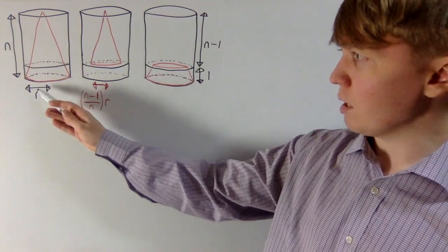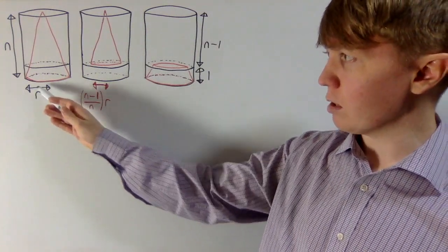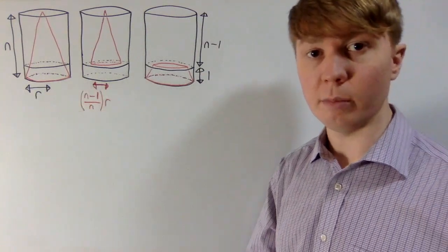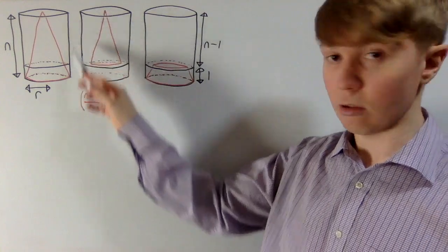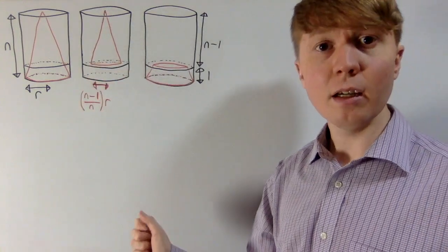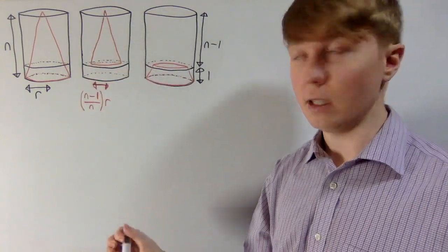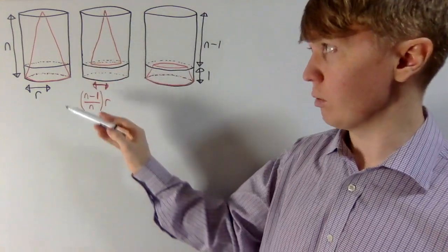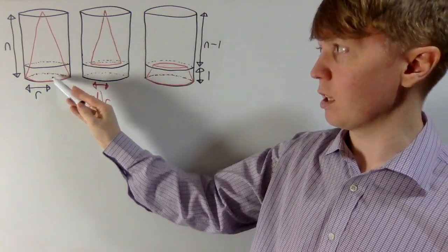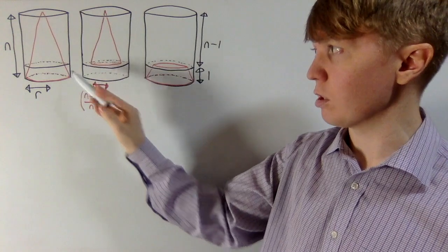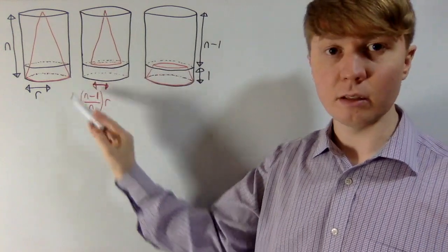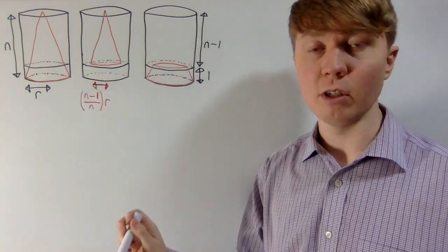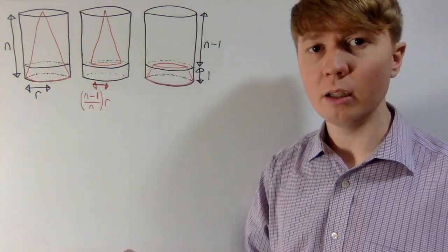To begin with, imagine you've got a cylinder, and the radius of the circular face at the bottom is r, the height of your cylinder is n, and then inside this cylinder we put a cone with the same measurements. The height of this cone is also n, and the radius of the circular face of our cone is also r.